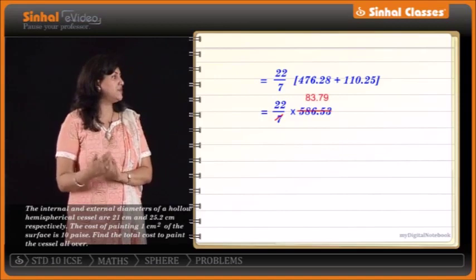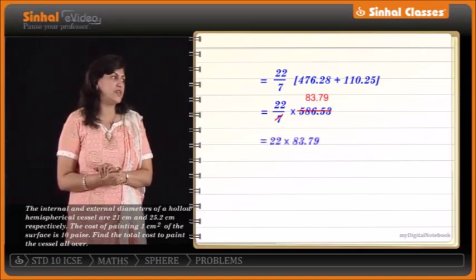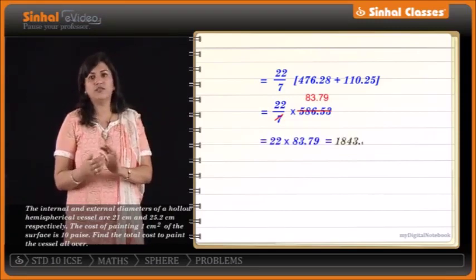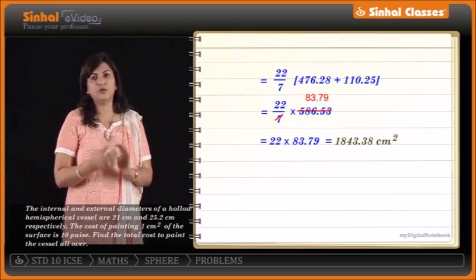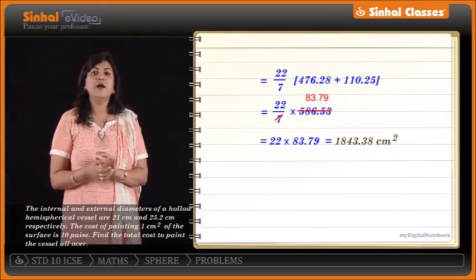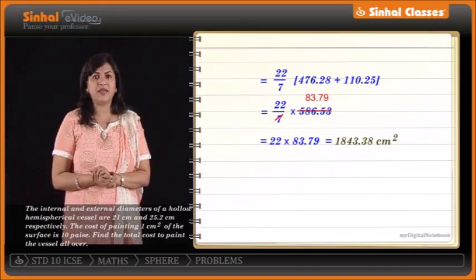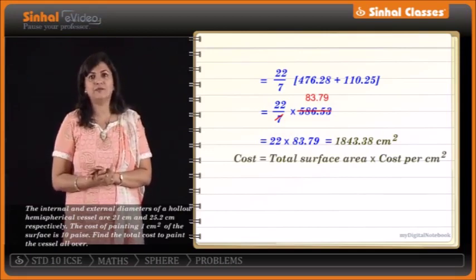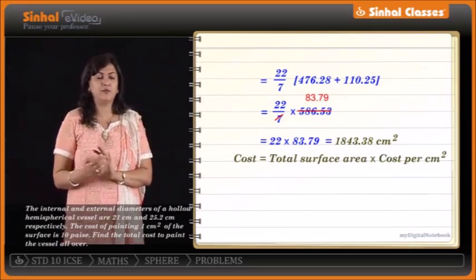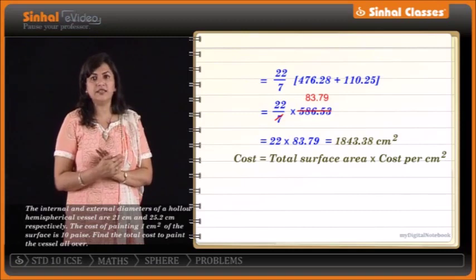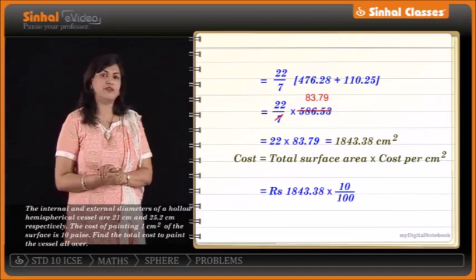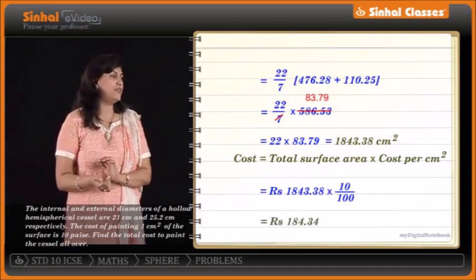Simplifying: (22/7) × 586.53 = 22 × 83.79 = 1843.38 cm² as the total surface area. The total cost of painting = 1843.38 × (10/100) = ₹184.34.